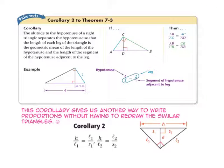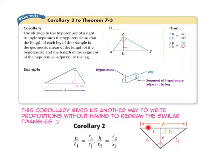Corollary 2 to theorem 7-3 says that the altitude to the hypotenuse of a right triangle separates the hypotenuse so that the length of each leg of the triangle is the geometric mean of the length of the hypotenuse and the length of the segment of the hypotenuse adjacent to the leg. So leg 1 is the geometric mean of the entire hypotenuse H and the adjacent segment S1, giving us H to leg 1 equals leg 1 to S1. Similarly, the whole hypotenuse to leg 2 equals leg 2 to S2.